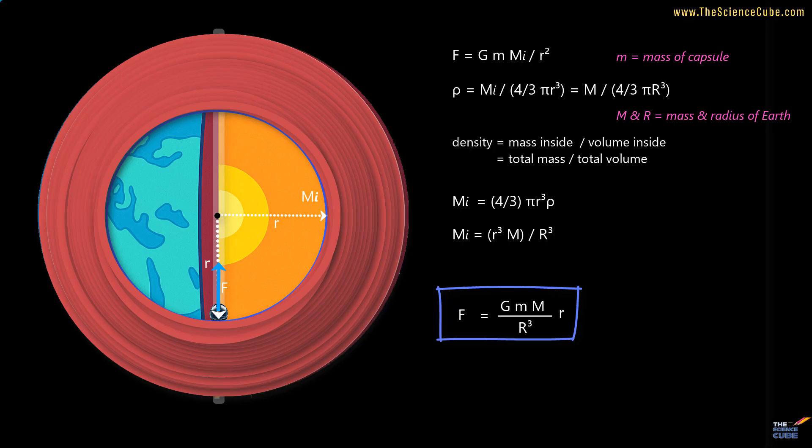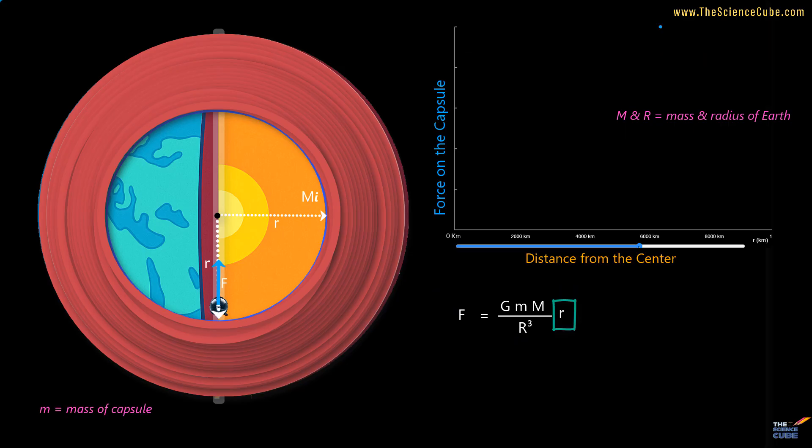If you observe this equation, what you will see is that the magnitude of force decreases linearly as the capsule moves towards the center. And then, at the center, when R becomes zero, the force becomes zero as well.